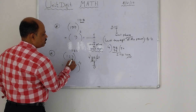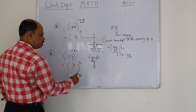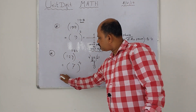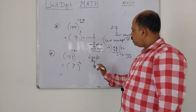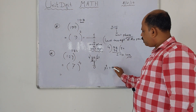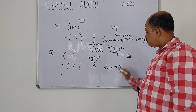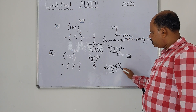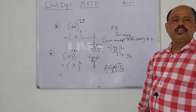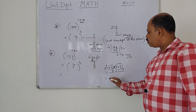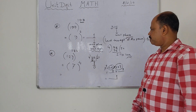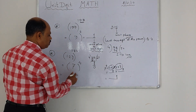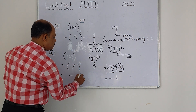Now see — what is the unit place of the number? Seven. Then, seven to the power four. Seven to the power four means seven into seven into seven into seven. Seven sevens are forty-nine, nine is in unit place. Again seven sevens are forty-nine, nine is in unit place. Then nine nines are eighty-one, one is in unit place. Therefore, the unit place of seven to the power four is one.